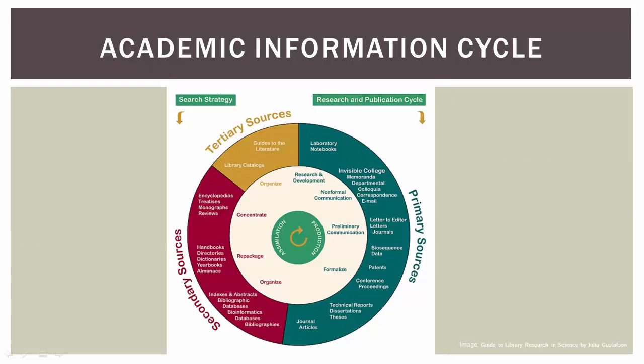Here's a different production model that shows how information is created in some academic disciplines. In this model, scholars respond to what happens in the lab or report on the results of other types of research. They start working on their ideas informally by talking and emailing with close colleagues. Then they might share preliminary results by giving a poster or presentation at a conference, or write an article and submit it to a journal for peer review.